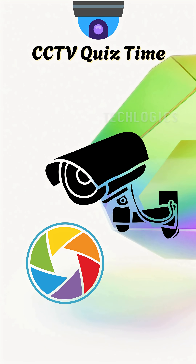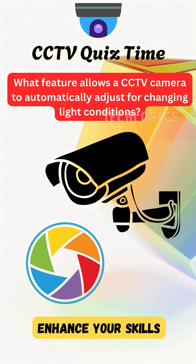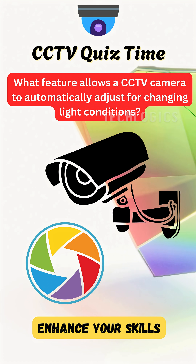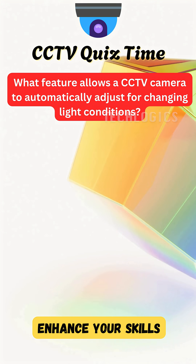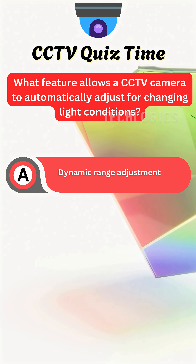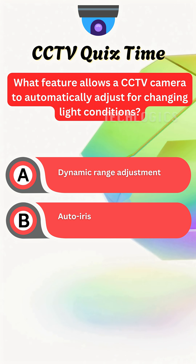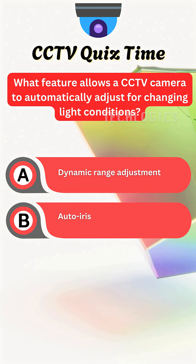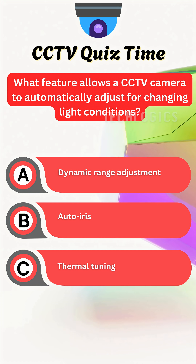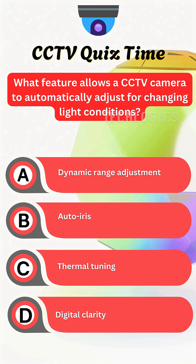Ready to challenge your understanding of technology? Here's a question for you. What feature allows a CCTV camera to automatically adjust for changing light conditions? A. Dynamic range adjustment. B. Autoiris. C. Thermal tuning. D. Digital clarity.